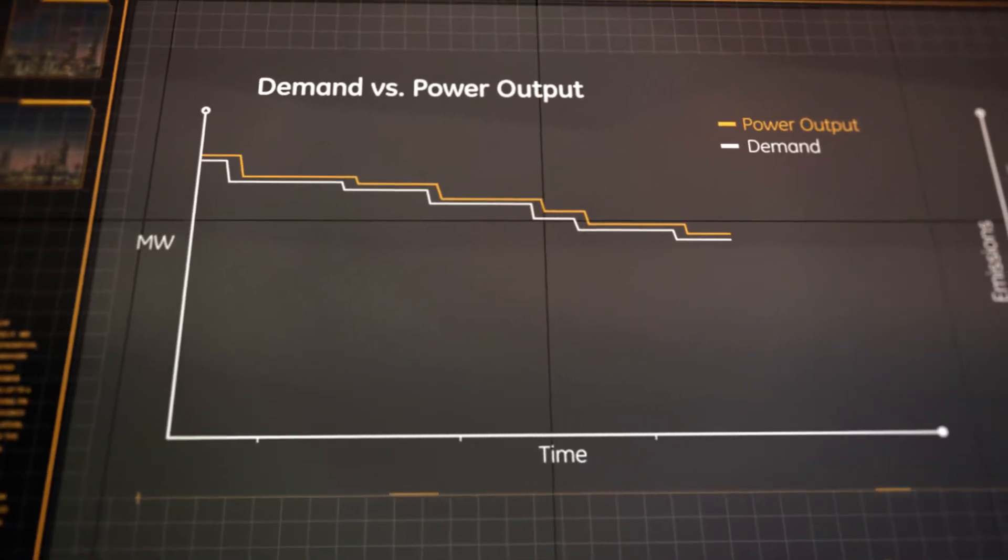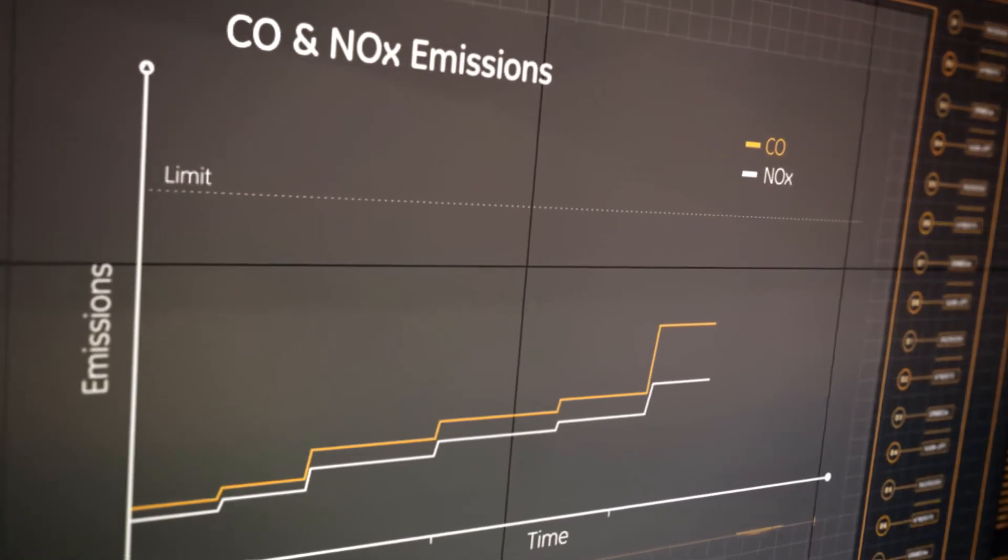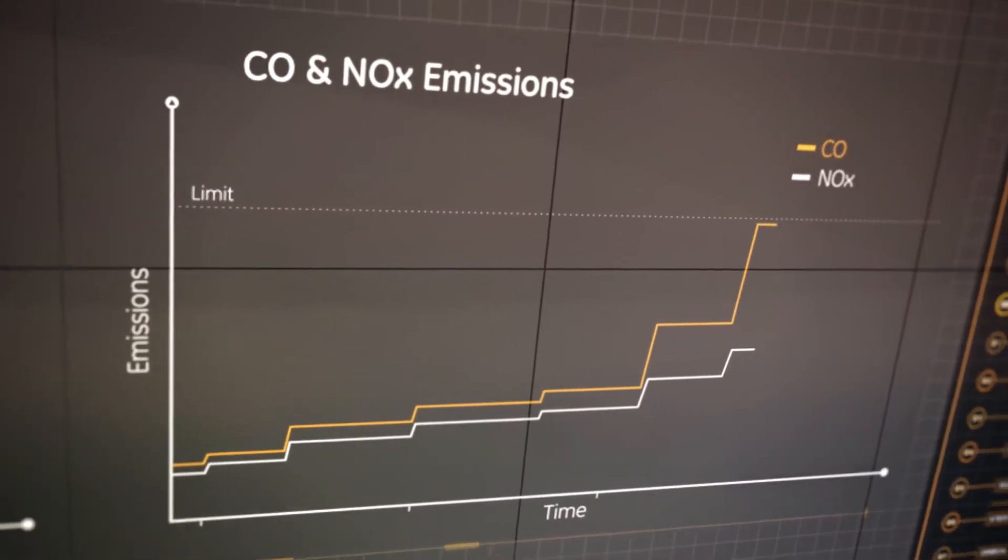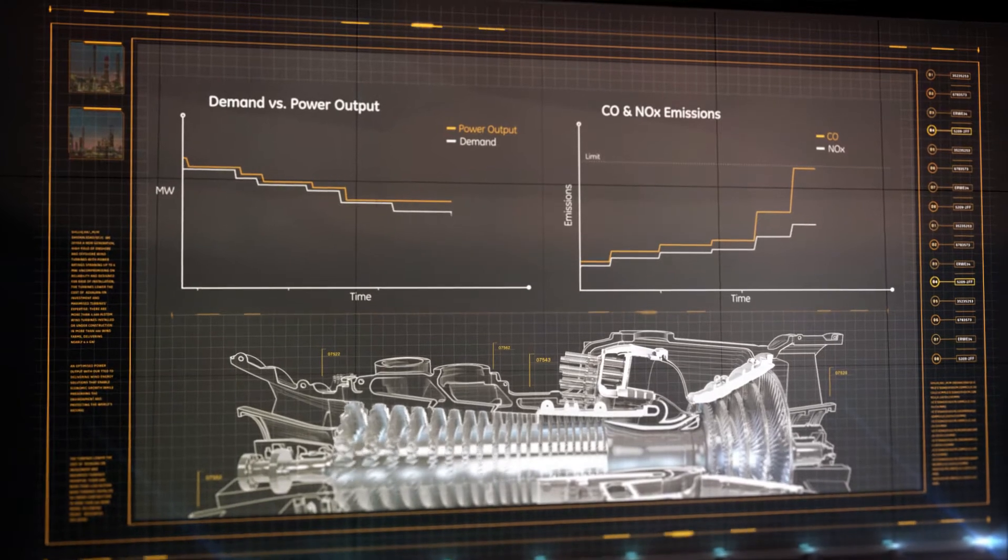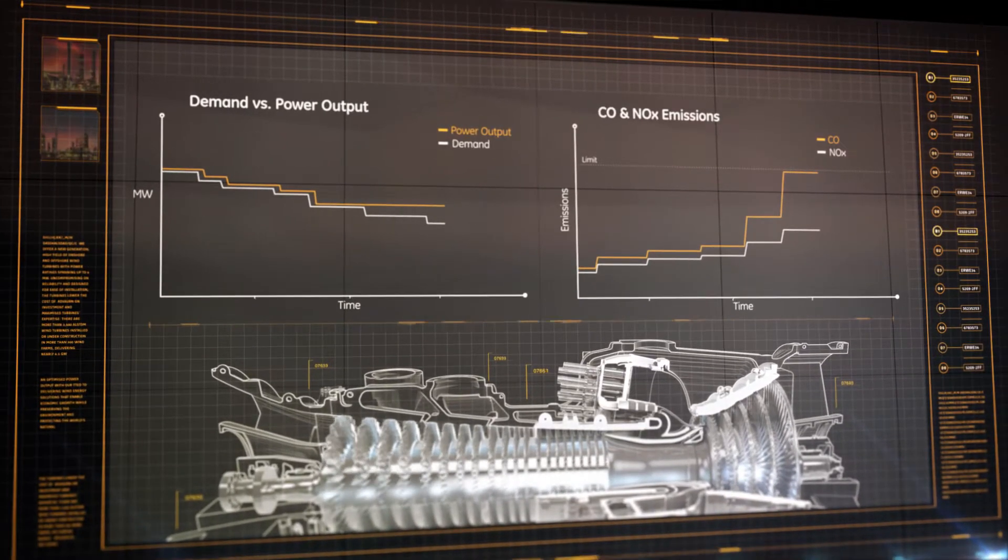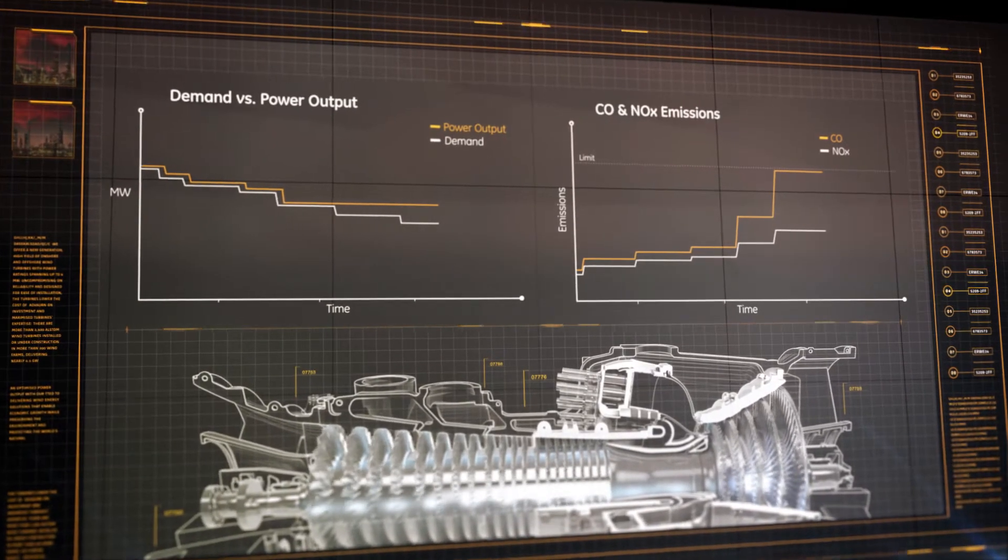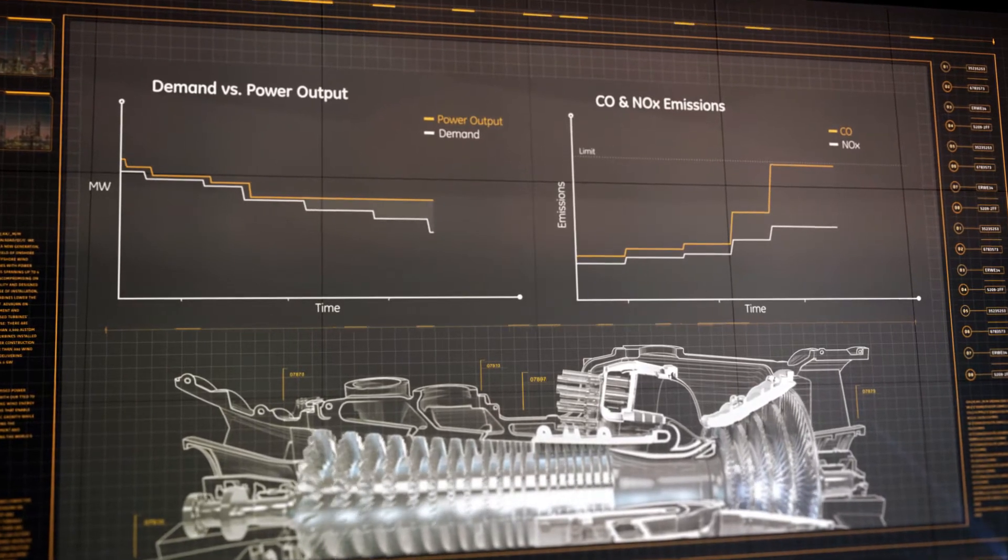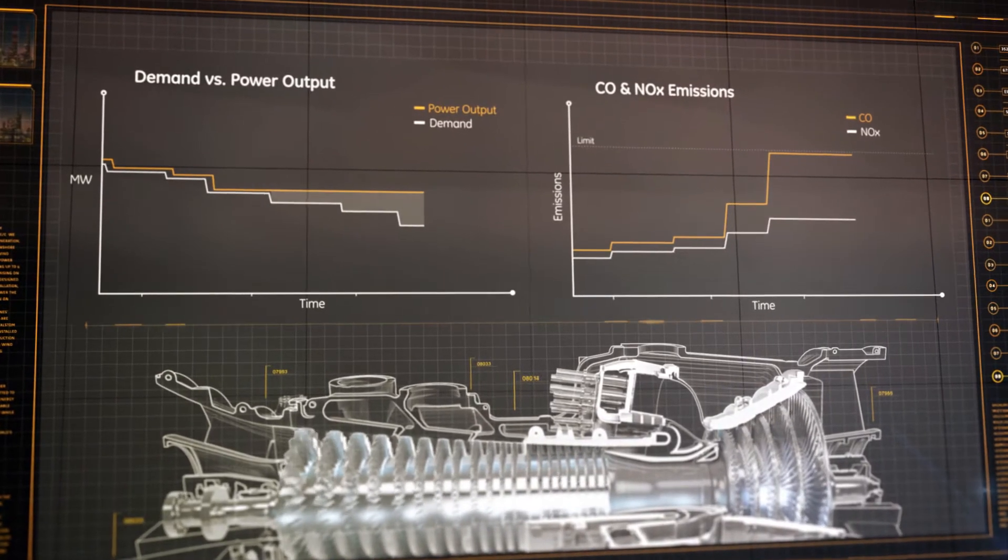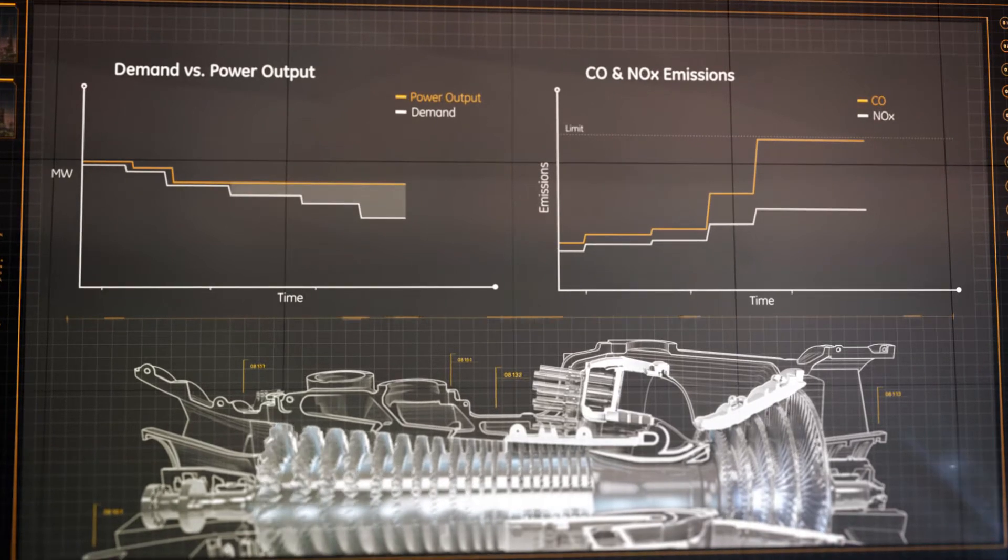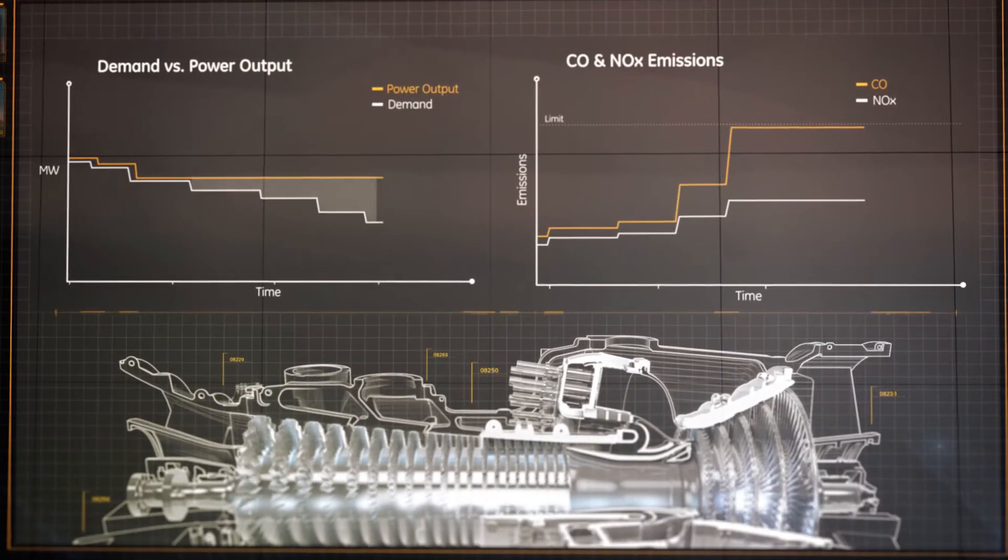As the GT load is reduced, emissions tend to increase until the environmental limit is eventually reached. Further load reduction to match the grid request may be constrained by environmental limitations. The load restriction could lead to an unbalance between the power output and the power demand. In such cases, the only option may be to shut down the GT.